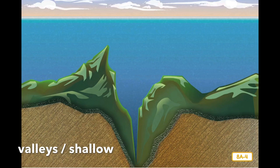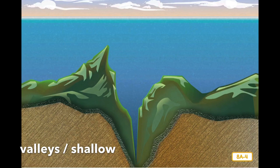The Pacific Ocean is full of both plant and animal life, but not all of them share the same space. The conditions under the water are very different in various places. Some parts are deep and some parts are shallow. There are cool parts and there are warm parts. Some are dark and some are full of light.